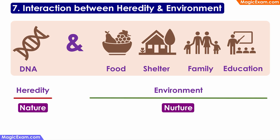The next principle is the principle of interaction between heredity and environment. This principle says that hereditary factors and environmental factors interact with each other in various types of development. Since heredity affects physical development to the maximum extent, let us take that as an example.